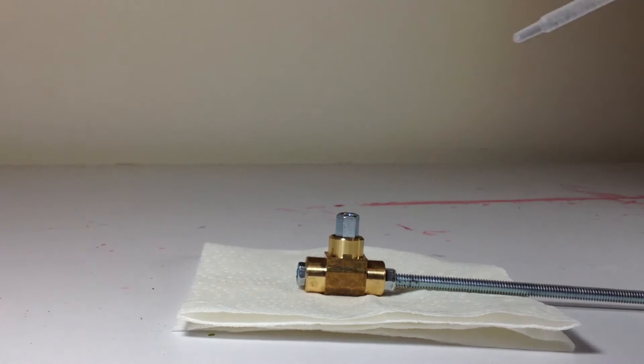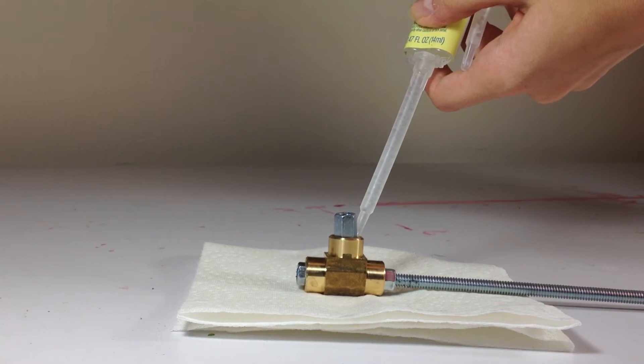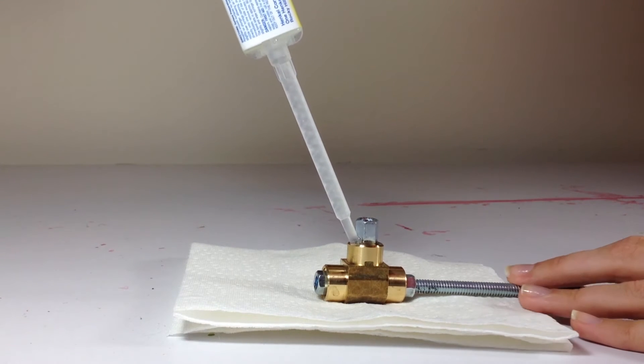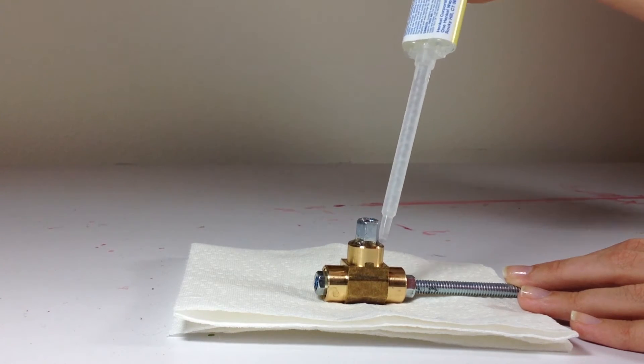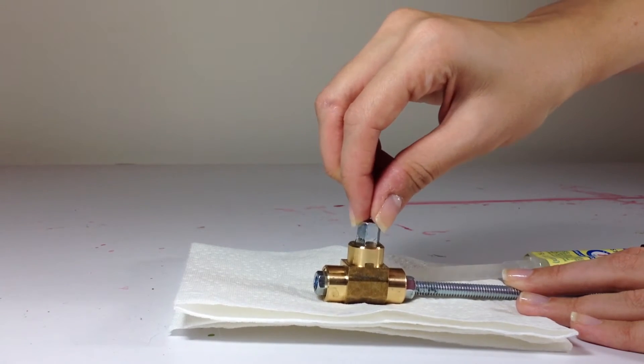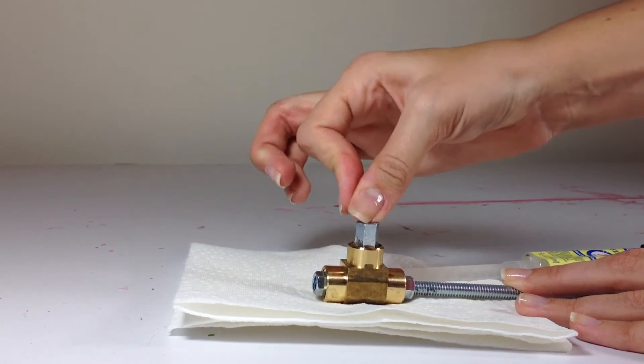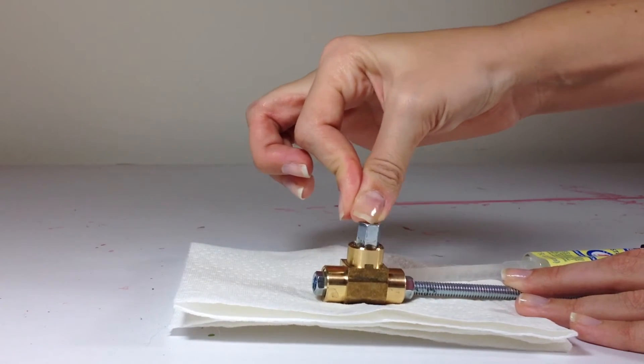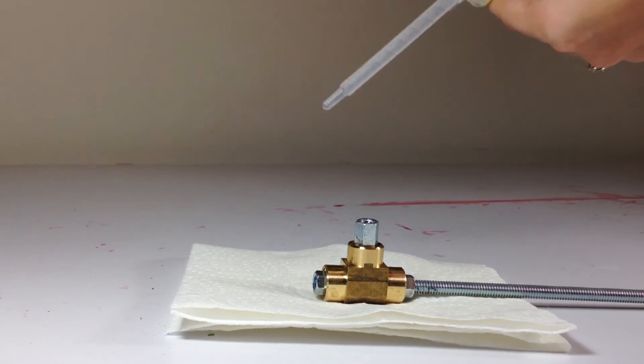And then you can take some more epoxy and just sort of fill in the gaps a little bit on the side. And you just want to continue to move all the way around the top until it's just about overflowing. And then just kind of roll it around so that it gets down around the sides. And this will start setting up pretty quick, so you want to move a little bit fast so that your syringe doesn't harden.